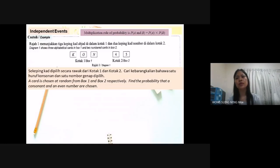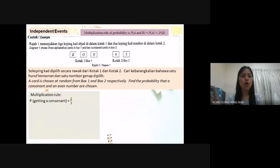As we know, multiplication rule of probability of A and B is equal to probability of A multiplied probability of B. Probability getting a consonant equal to 2 over 3. Why 2 over 3? The total cuts in box 1 is 3. And consonant, we have letter K and letter N. So, 2 letters. 2 over 3. Probability getting an even number. From box 2, we have 2 cuts. An even number is 4. So it's 1 only. So, 1 over 2.